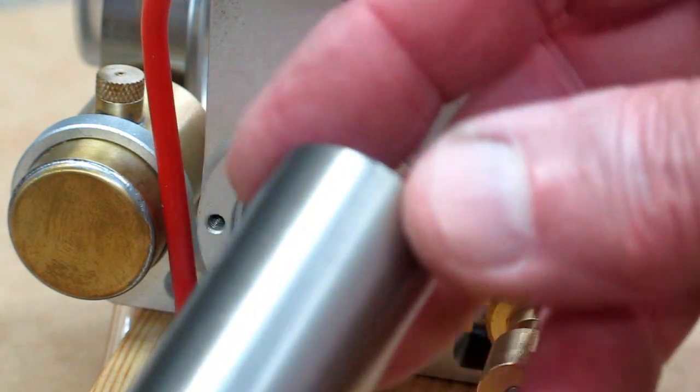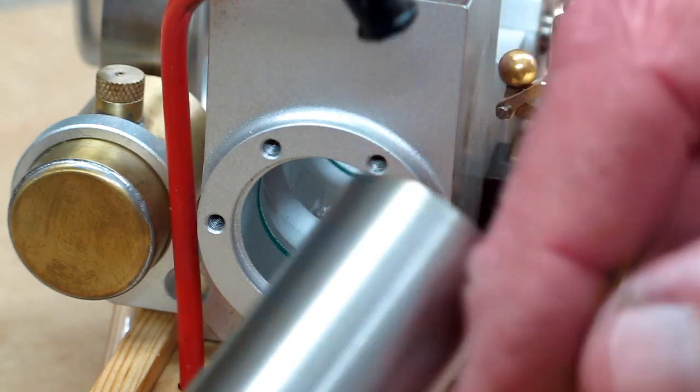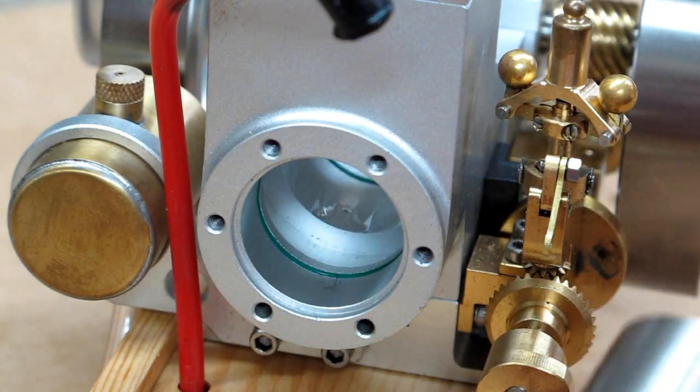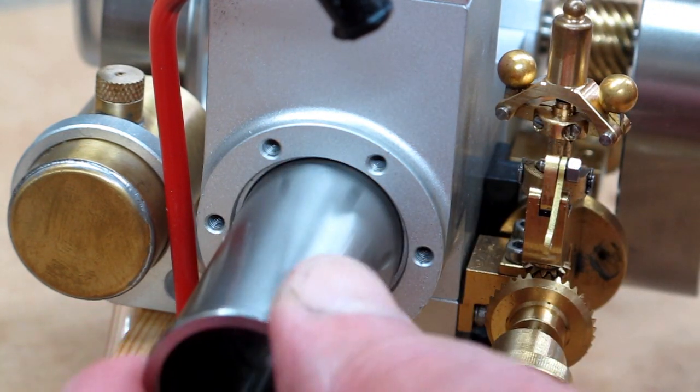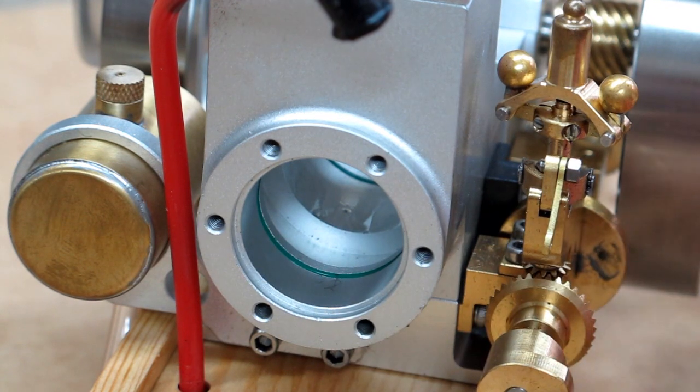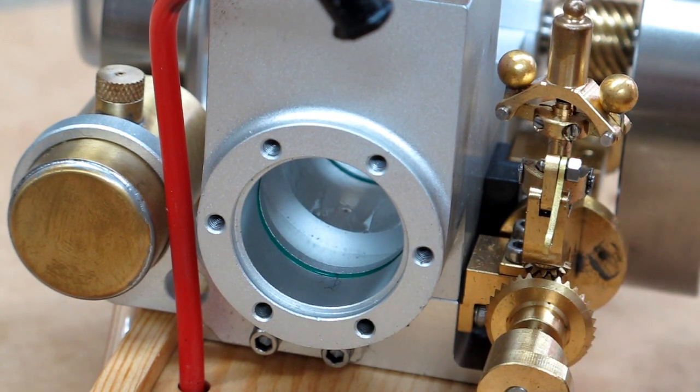So we are going to take this liner and rub it with 3-in-1 oil and oil this up real good. Put the piston back in here and carefully turn and reinsert this. That is a bit of an oily mess so I am not going to show the process on camera.